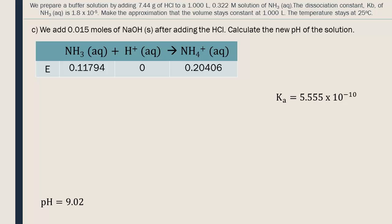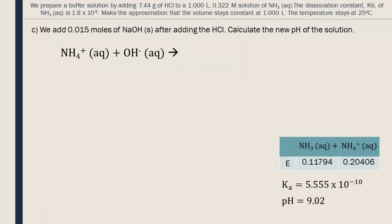Part C. We will keep the pH, Ka, and the concentrations in our buffer solution for this part of the question. The 0.015 moles of base that we add to the buffer solution will react with the acid NH4+ inside the solution to create NH3 and water. The Na+ from the NaOH is a spectator ion and will not react, so we won't include it in the equation. NaOH is a strong base, so the ions will push the reaction completely towards the products until there are no more reactants.